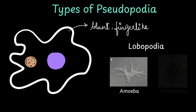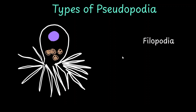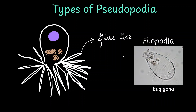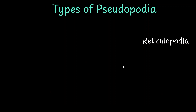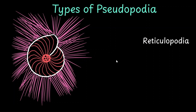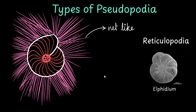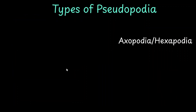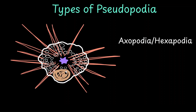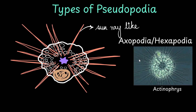Second is filopodia — these are very fiber-like, filamentous pseudopodia that are very tapering, seen in organisms like euglypha. Third is reticulopodia — these are branched and interconnected pseudopodia that are net-like, observed in alphidium. Axopodia or hexapodia are straight needle-like pseudopodia; in these organisms they look like the sun's rays, and such pseudopodia are seen in actinophers.